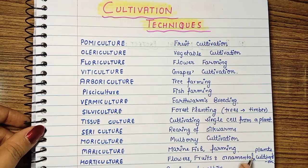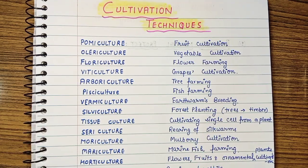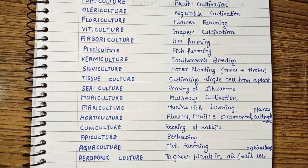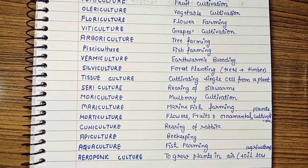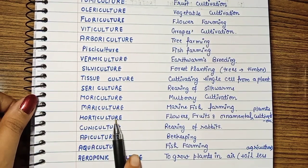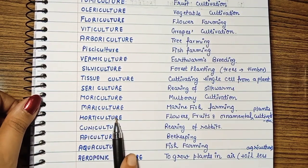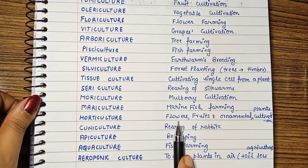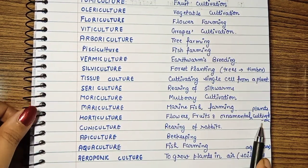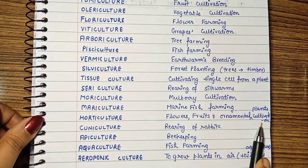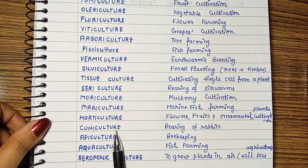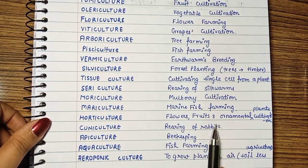Mariculture is marine fish farming — farming of marine fish. Next, what is Horticulture? Horticulture covers flowers, fruits, and ornamental plants. Then, Cuniculture — Cuniculture is rearing of rabbits.